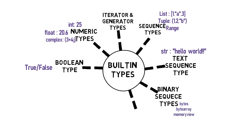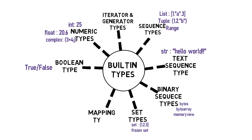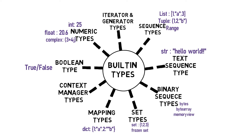Next we have set types, which includes set and frozen set. Then we have mapping types, which includes the dictionary data type. And finally we have the context manager types.